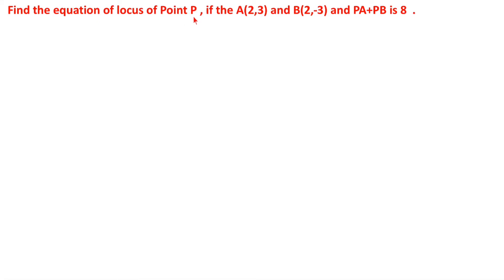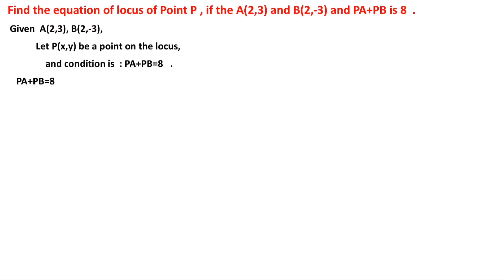Find the equation of the locus of point P if A(2,3) and B(2,-3) are two points and PA + PB = 8. Here A and B are two fixed points and P(x, y) is any point on the locus satisfying the condition PA + PB = 8. Transposing PB to the right-hand side gives PA = 8 - PB.